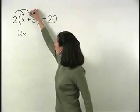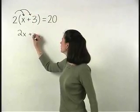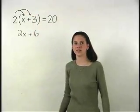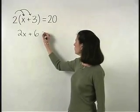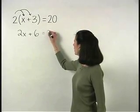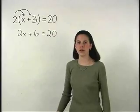And 2 times positive 3, which is positive 6. So our equation now reads 2x plus 6 equals 20.